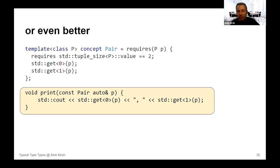An even better approach is to use a C++20 concept: require P to have a tuple_size of two, and that std::get<0> and std::get<1> work for that type. This is generic but restricts to only actual pair-like types — std::pair, std::tuple, and std::array all satisfy this.